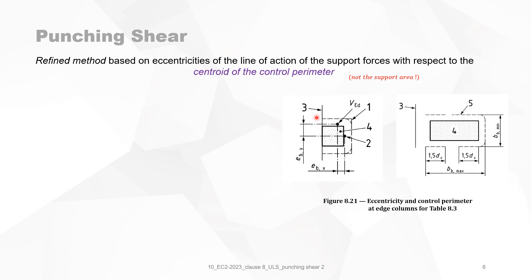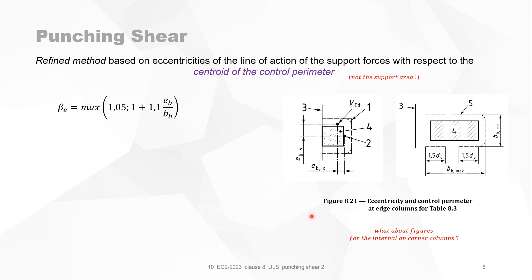In Figure 8.21, position 3 is the edge of the slab and the dotted area 4 is the support area. VED is the design value of the shear force, acting with eccentricities EBY and EBX. The eccentricity is measured with respect to point 0.2, which is the center width of the control perimeter. However, Figure 8.21 is only shown for an edge column, so figures for internal and corner columns are missing — it would be helpful to complete this series.